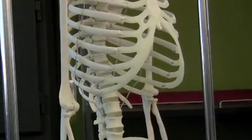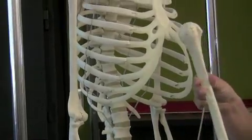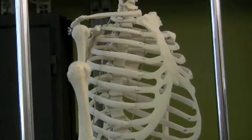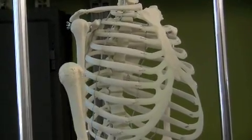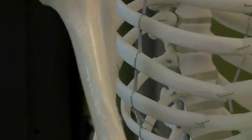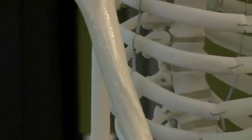Now the deltoid tuberosity is the last marking on the humerus to find. This is it facing forward, and then you turn it almost to the back. There's a ridge right here called the deltoid tuberosity. So it's right there, and what muscle do you think attaches there? The deltoid, right.